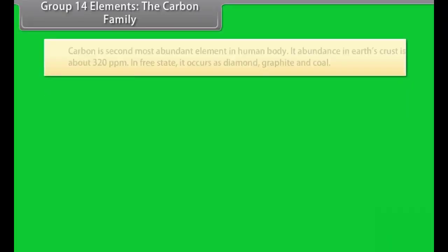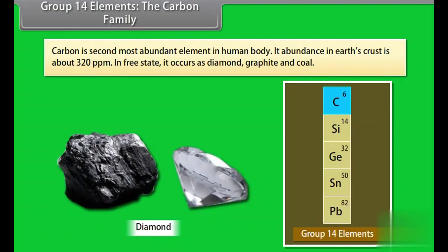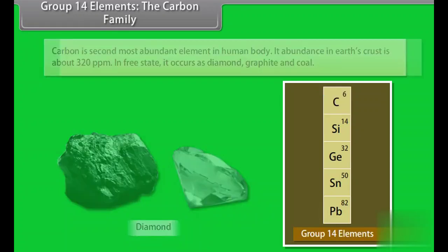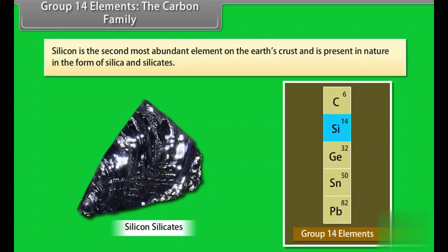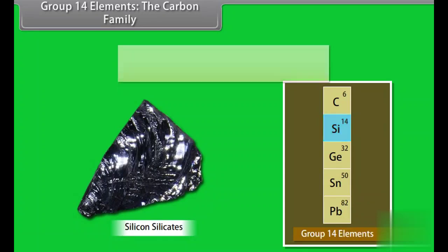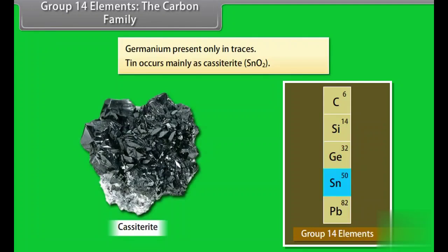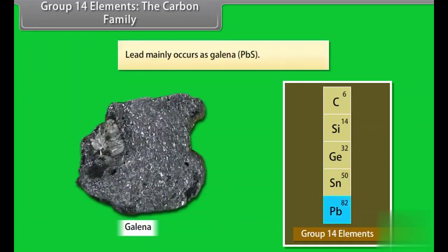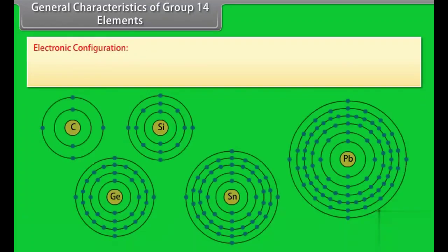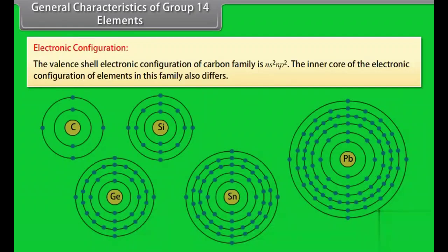Group 14 elements, the carbon family. Carbon is second most abundant element in human body. Its abundance in earth's crust is about 320 parts per million. In free state, it occurs as diamond, graphite and coal. Silicon is the second most abundant element on the earth's crust and is present in nature in the form of silica and silicates. Germanium present only in traces. Tin occurs mainly as cassiterite SnO2. Lead mainly occurs as galena PbS.